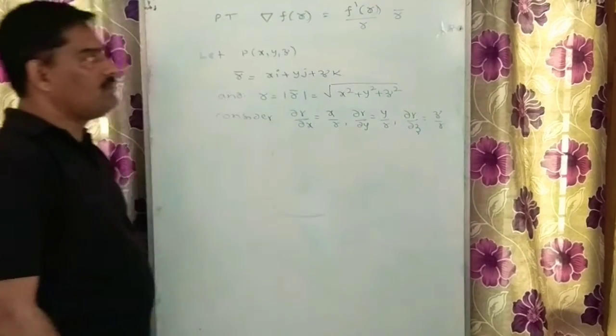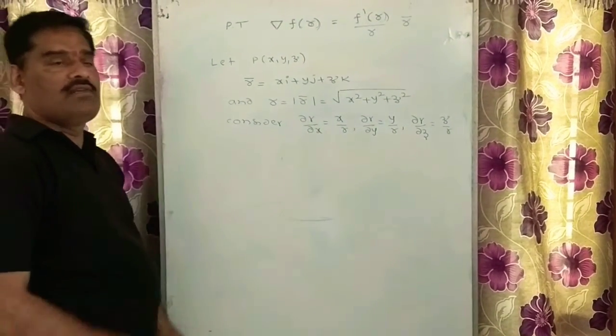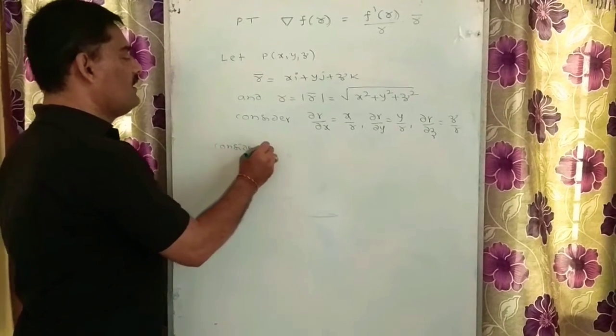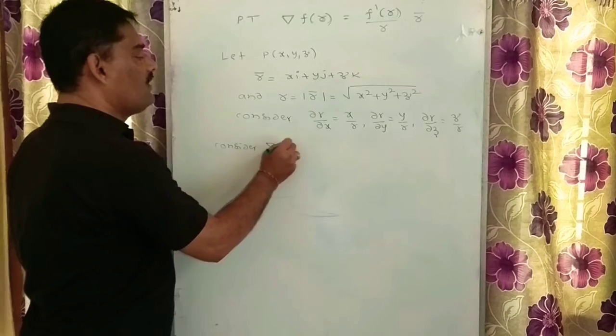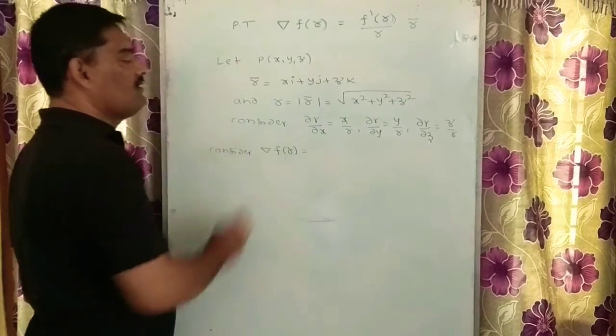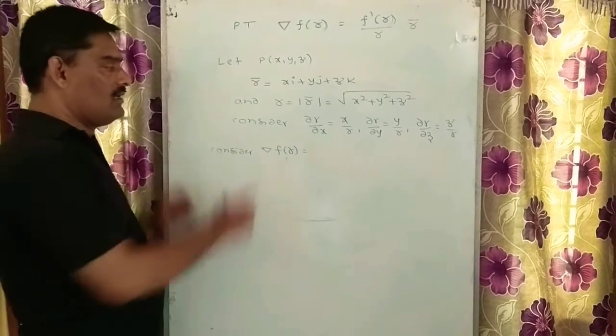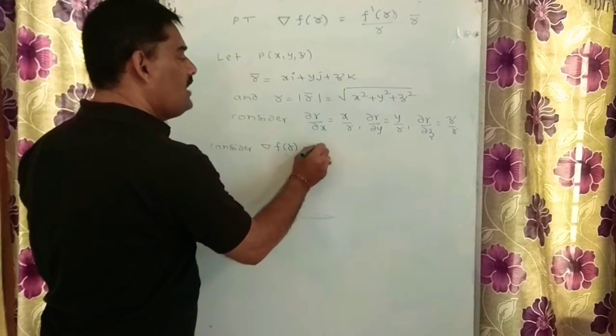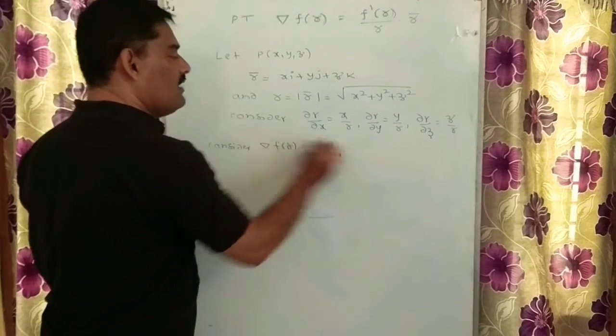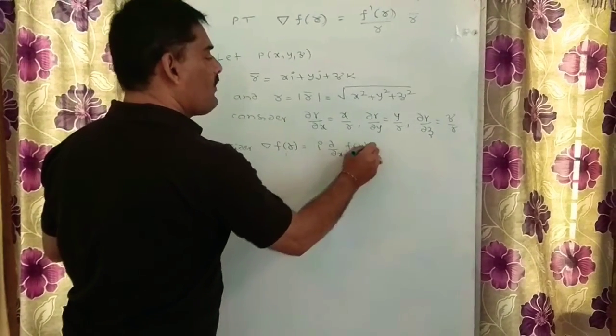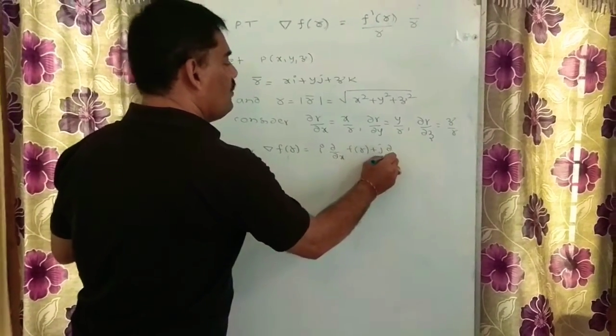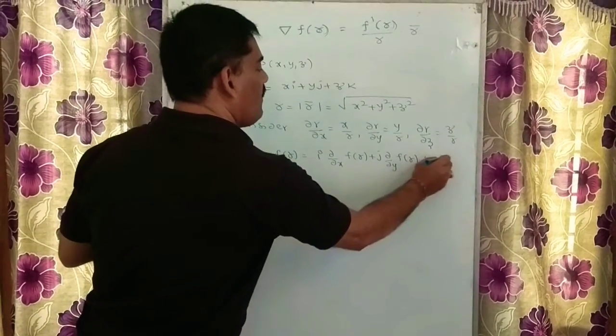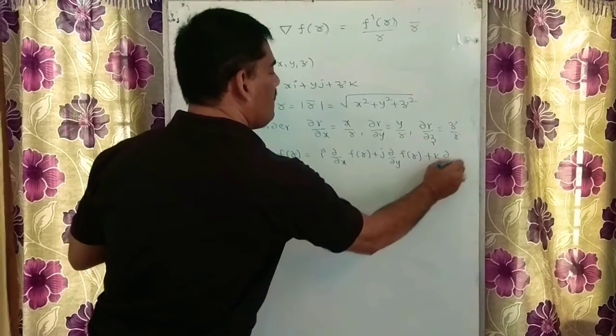By using this notation, now we have to prove the given statement. I am calculating del of f of r. This is a function involving r. As per the definition of del, the gradient definition, i into dou by dou x of f of r plus j dou by dou y of f of r plus k dou by dou z of f of r.